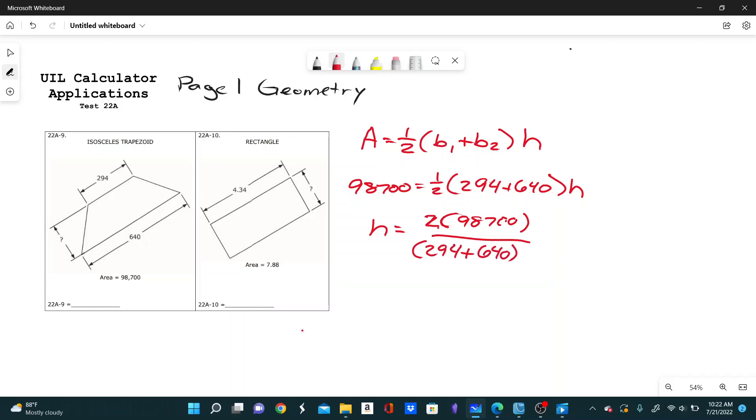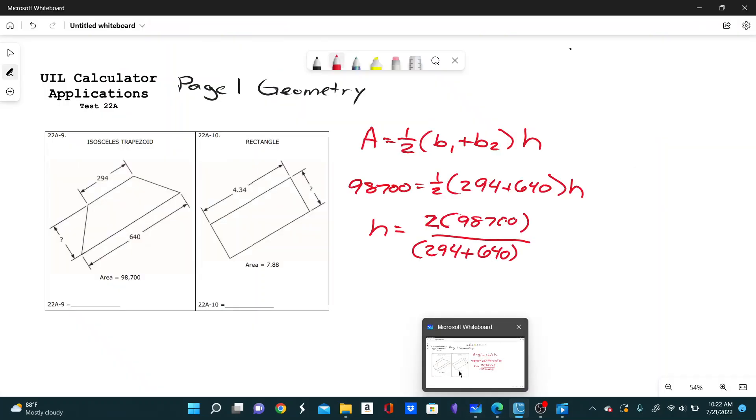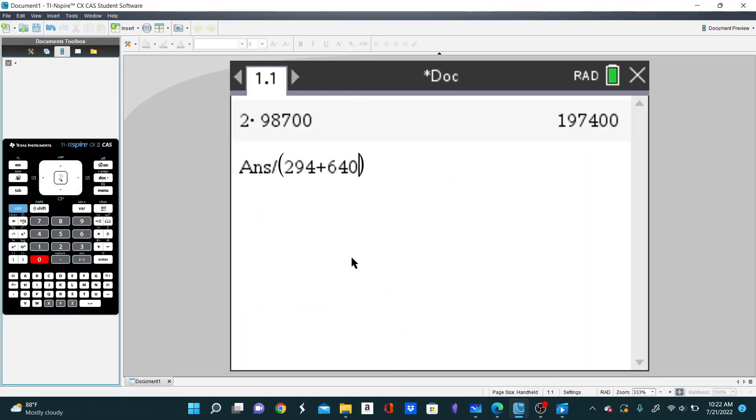This should give us the height. So let's say 2 times 98,700, and then divide that by 294 plus 640. And you get, rounding to three sig figs, you get 211.